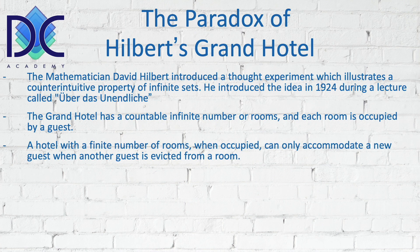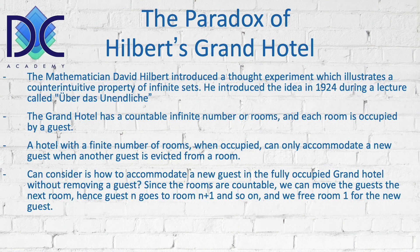When you consider a hotel with a finite number of rooms and all rooms are occupied, we can only accommodate a new guest when another guest is evicted or leaves the hotel. Now the question is: can we accommodate a new guest in the fully occupied Grand Hotel without removing a guest? We have an infinite number of rooms n, all occupied. Because the rooms are countable, we can move each guest to the next room — guest in room n moves to room n+1. By moving all guests one room forward, we free up room 1 for the new guest.